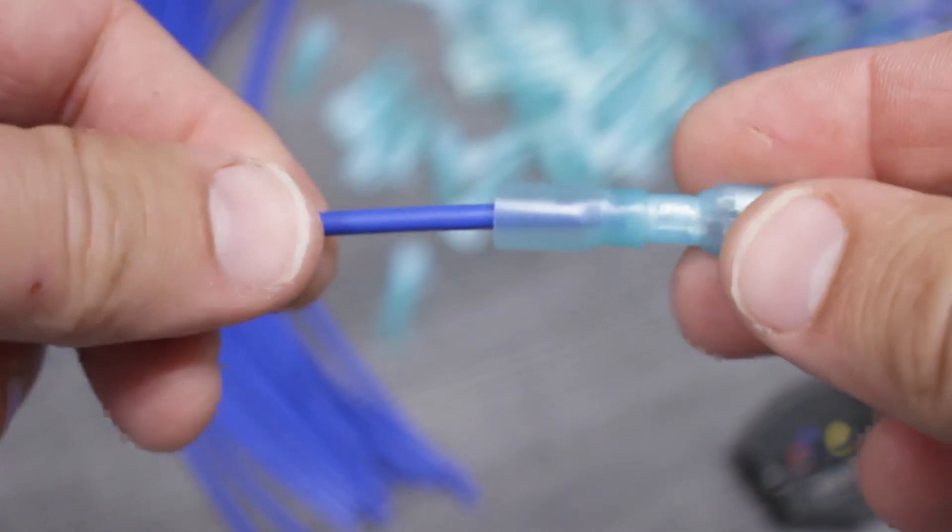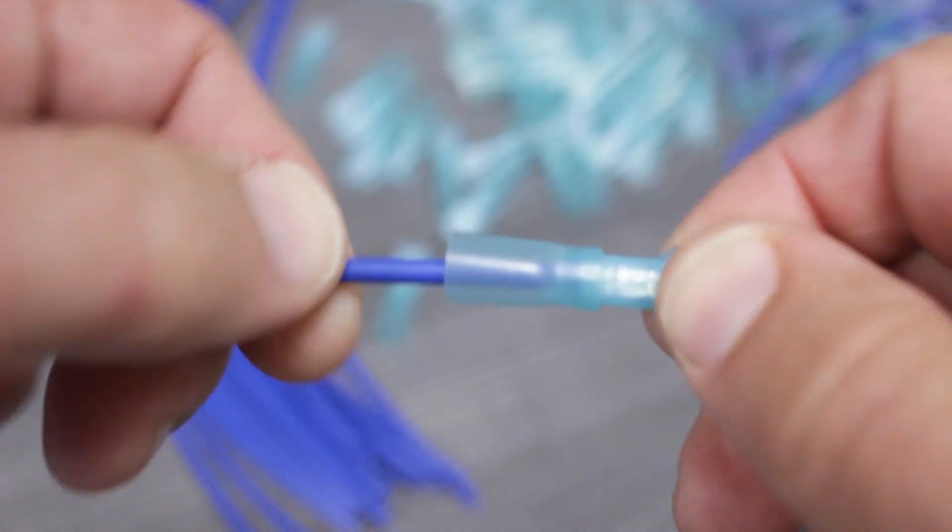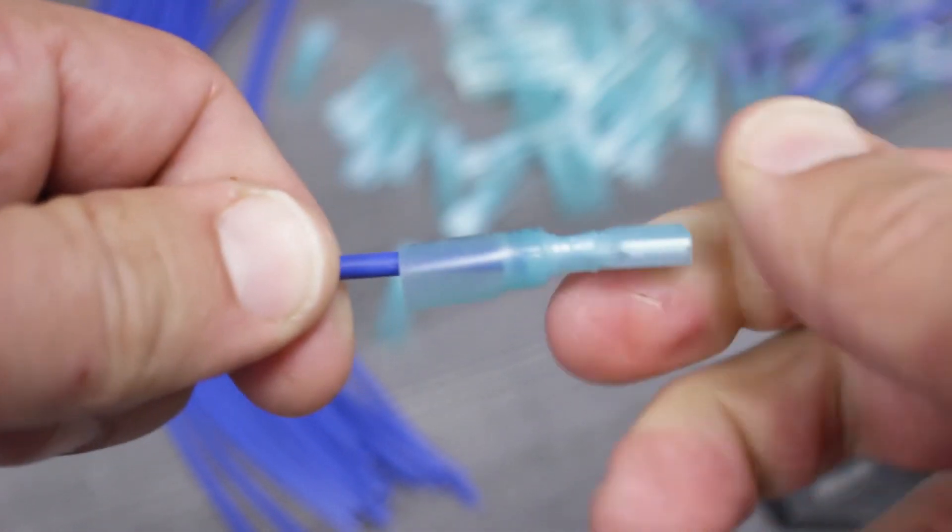To ensure a solid connection, perform a tug test by gently pulling from both sides of the connection point, paying careful attention for any movement or give. Since it didn't move, we know this connection point is solid.